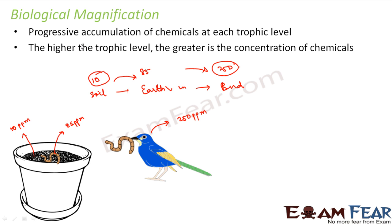This phenomenon is known as biological magnification — the word 'magnify' means to amplify or increase. It is defined as the progressive accumulation of chemicals at each trophic level. We also observe biological magnification in the grains, pulses, and vegetables we eat, since insecticides are applied to all crops. That is why parents advise washing fruits before eating and washing vegetables before cooking — to get rid of as many undesirable substances as possible.